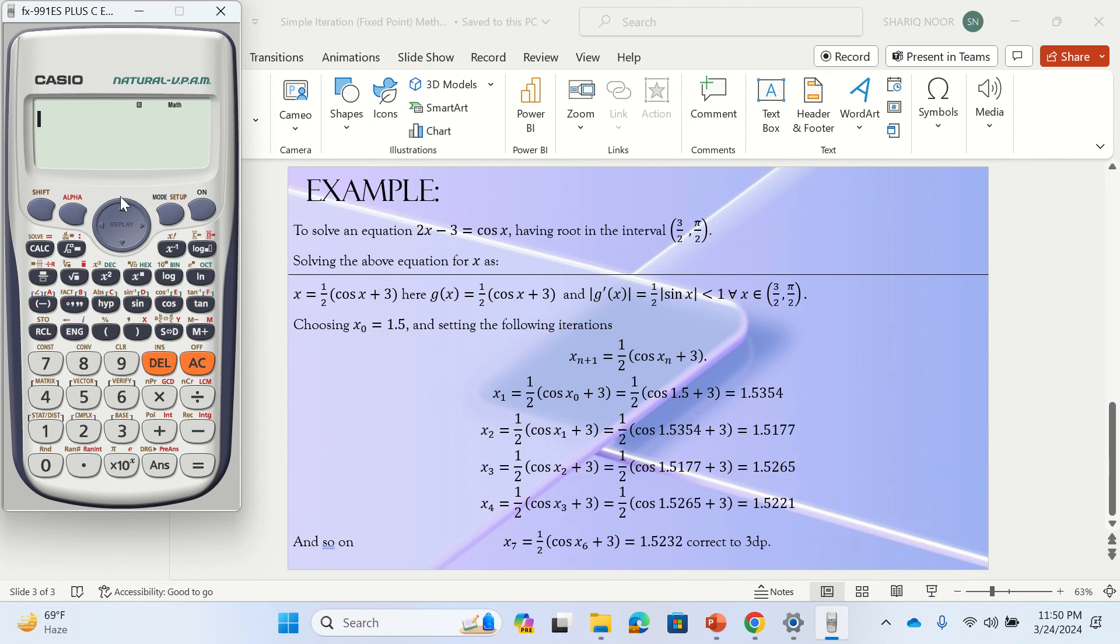Now what would you do? You simply type this equation here. I'll go for alpha and then simply put x, then I'll put equal, and then we have this function - you can simply write 0.5 times cos(x). So we have cos, then we will be having x here, back, and then we close the bracket, then plus 3 and closing the bracket.